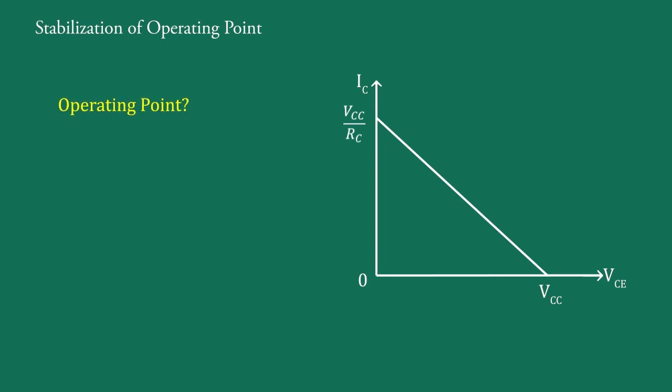The operating point is the intersection of the DC load line with the base current. That means the values of IB, IC, and VCE for zero signal on the load line is known as operating point Q.